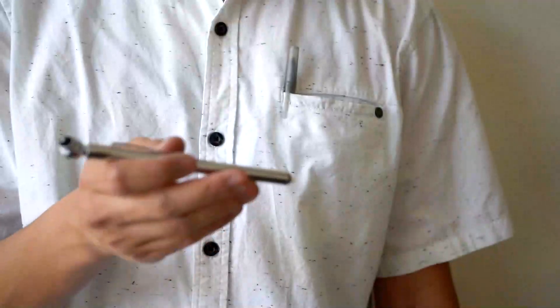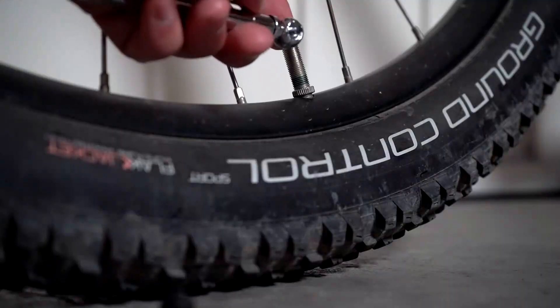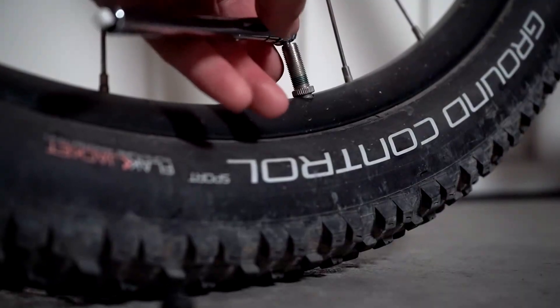All on a tool the size of a normal pen or pencil. Adjust tire pressure on the fly using the deflator located on the back of the pressure nozzle.